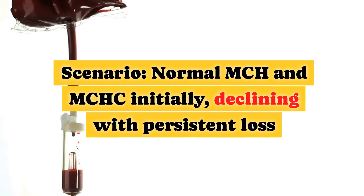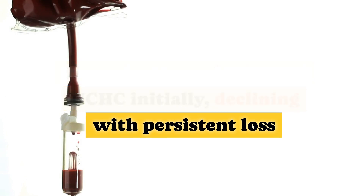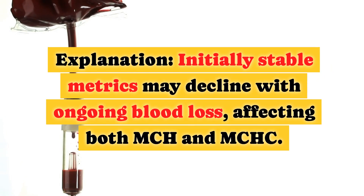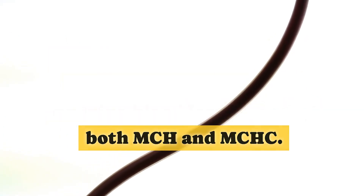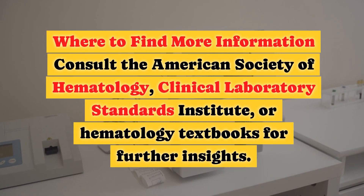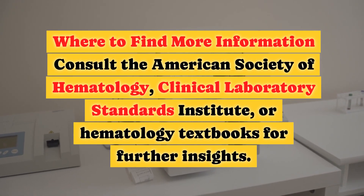Acute Blood Loss Anemia Scenario — Normal MCH and MCHC initially, declining with persistent loss. Initially stable metrics may decline with ongoing blood loss, affecting both MCH and MCHC.